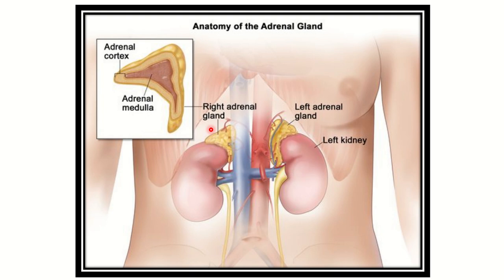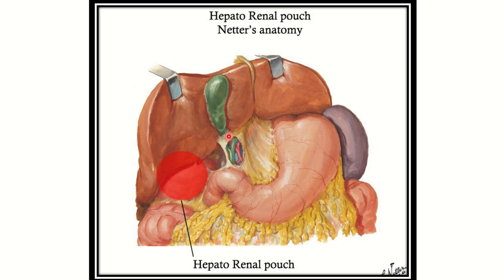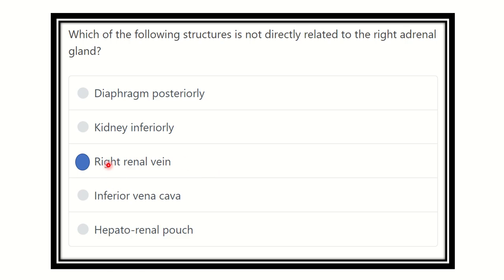The diaphragm is related to the posterior part of the right adrenal gland, at the vertebral level. We can also see the hepatorenal pouch in this area — just above the right kidney there is the right adrenal gland, so the right adrenal gland is related to the hepatorenal pouch, as well as other structures such as the liver.